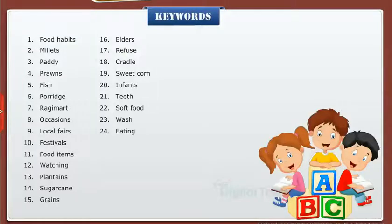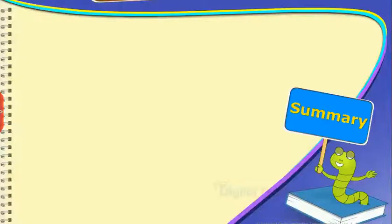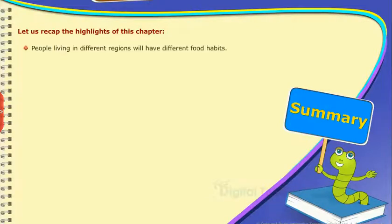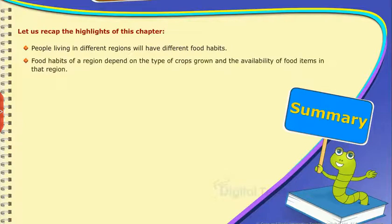Keywords: A list of keywords are shown on this screen. Summary — let us recap the highlights of this chapter. People living in different regions will have different food habits. Food habits of a region depend on the type of crops grown and the availability of food items in that region.